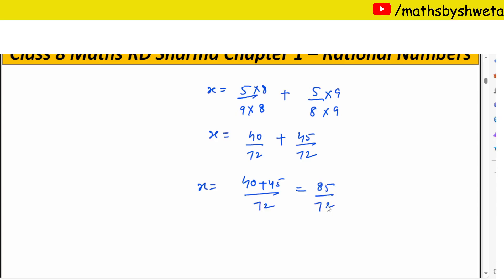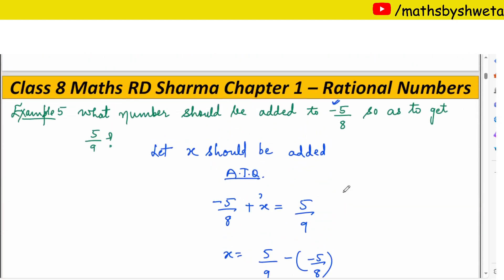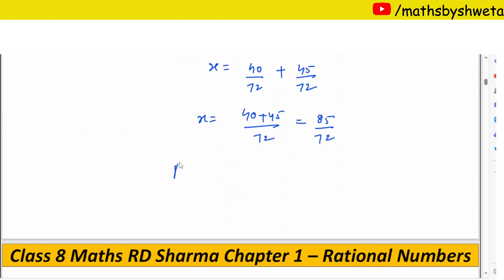Now your answer is 85 upon 72. This is not a table, leave it here. This is your answer, the number you need: 85 upon 72.